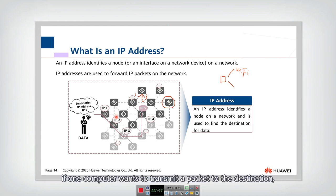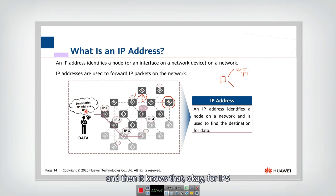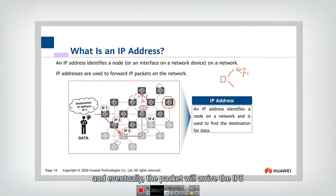If one computer wants to transmit a packet to the destination, then it should rely on the router to forward the packet to the correct link. How does this router forward the packet? It will check the destination IP address, and then it knows that for IP5, it should forward through this link. Similarly, for the next router, it forwards through another link, and eventually the packet will arrive at IP5. That is the function of the IP address.